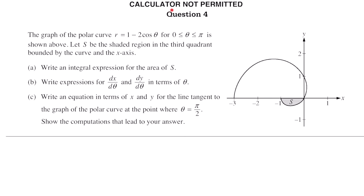For this FRQ, a calculator is not permitted. The graph of the polar curve r equals 1 minus 2 cosine of theta, for theta between 0 and pi, is shown. Let S be the shaded region in the third quadrant, bounded by the curve and the x-axis.